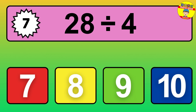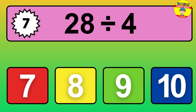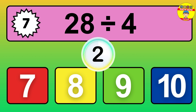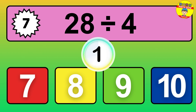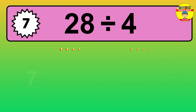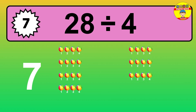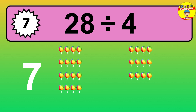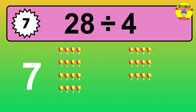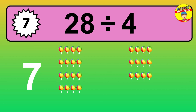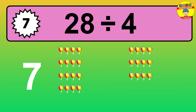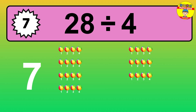28 divided by 4 — time to think! Let's go to the solution. Divide the number 28 by 4. Each group contains 4 units, so dividing 28 by 4 results in 7 equal groups. Thus, the result is 28 divided by 4 equals 7.